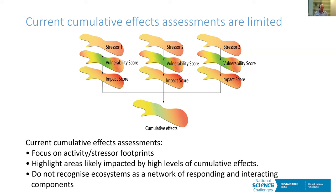These kinds of cumulative effects assessments don't recognise ecosystems as a network of responding and interacting components, and they tend to account very poorly for the hyper-connectivity of our marine ecosystems. Activities and stressors generate impacts at one place, but through ecological connectivity may generate impacts at very far-field distant effects. So one of the things done within the challenge was thinking about how we can reframe these cumulative effects assessments — rather than a stressor accounting exercise, begin to shift the focus into how the ecosystem might respond.